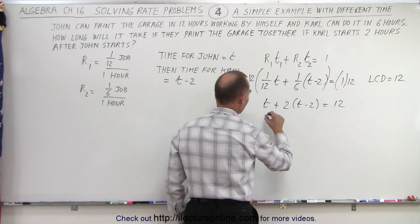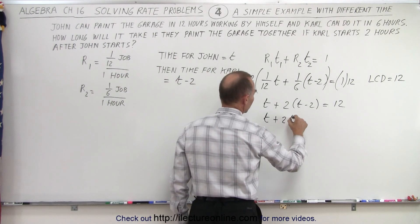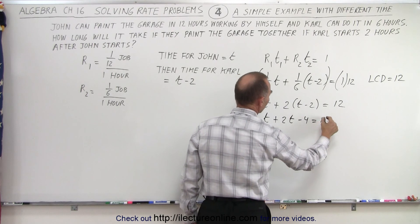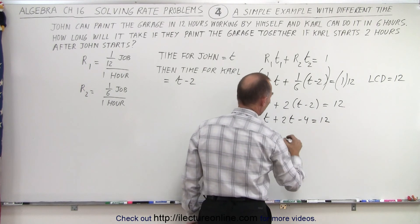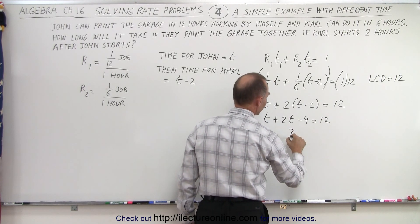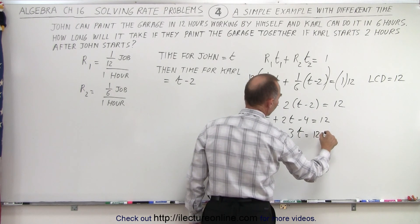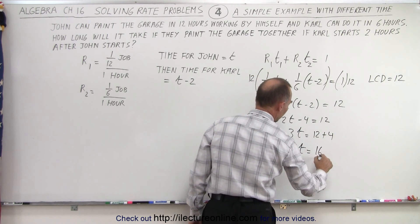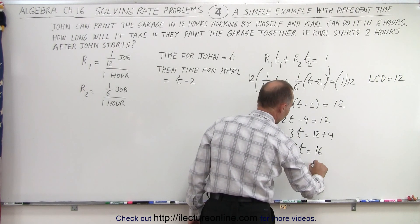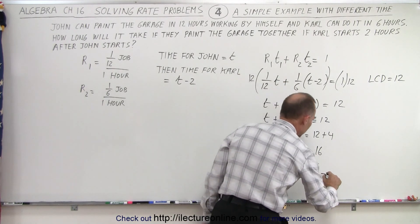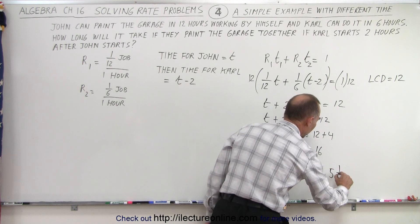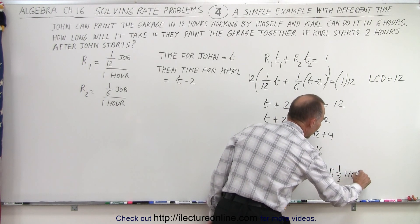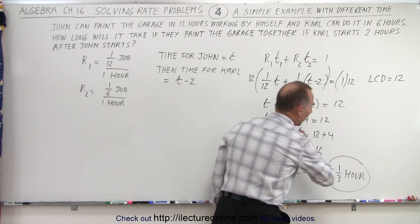First we get rid of the parentheses: t plus 2t minus 4 equals 12. Move the minus 4 over, we get t plus 2t, that's 3t, equal to 12 plus 4, or 3t equals 16. So the time equals 16 divided by 3, which would be 5 and 1/3 of an hour to do the whole job.